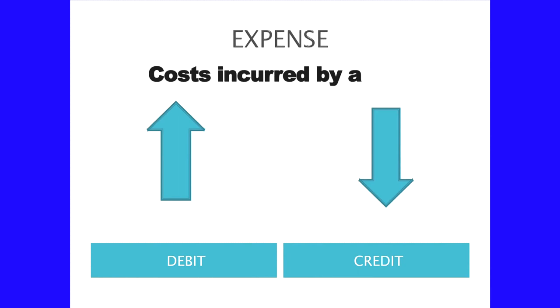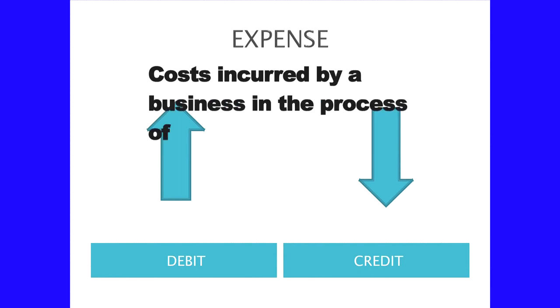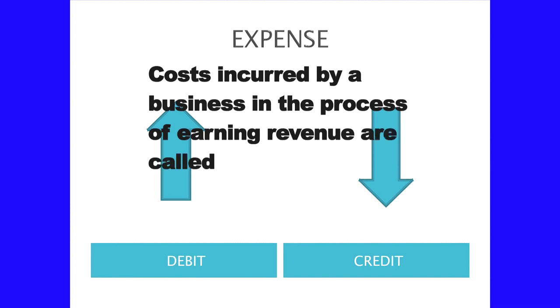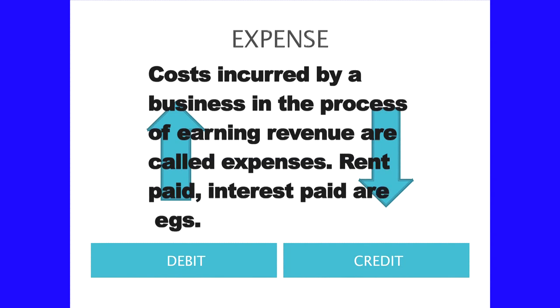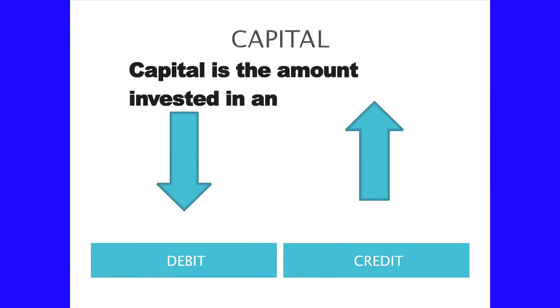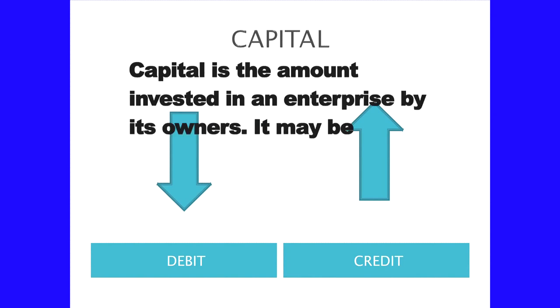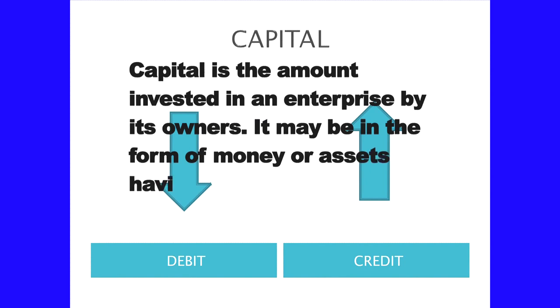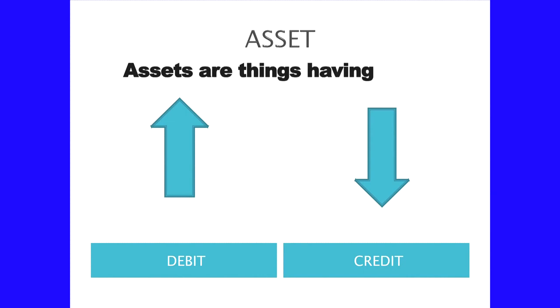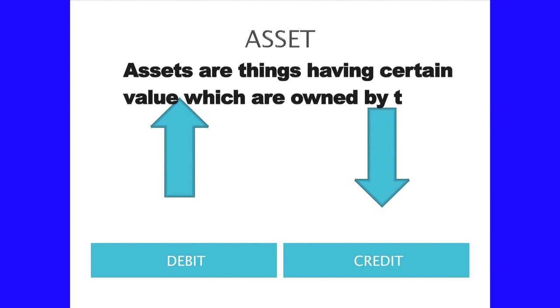Costs incurred by a business in the process of earning revenue are known as expenses. Rent paid can be said as an expense; interest paid is an expense. What is capital? The amount invested in the business by the owner can be called capital. It may be in the form of money or assets having value. Assets are things having certain value which are owned by the business.